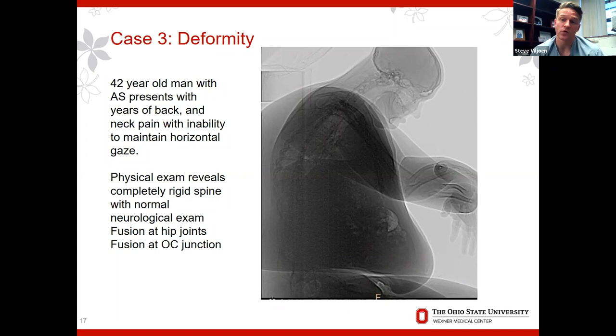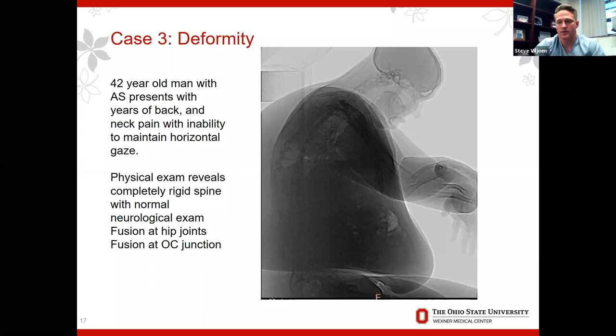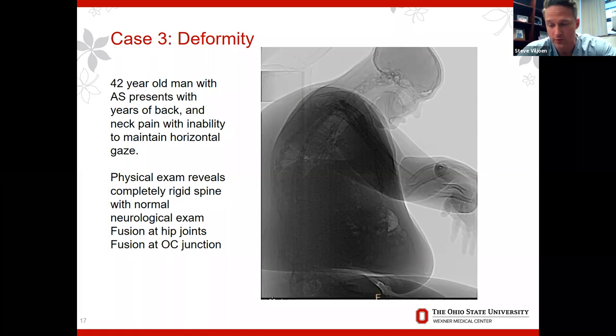With his hips fused and fair amount of contractures, I definitely did not want to do the lumbar spine first. I told the team: I'll do his neck, but the hips must be done before I do the low back. If I do a lumbar PSO with fused hips, he won't be able to stand or do anything until the hips are mobilized and he does extensive therapy to work through those contractures.